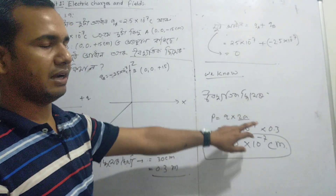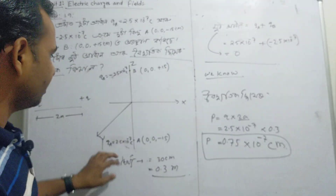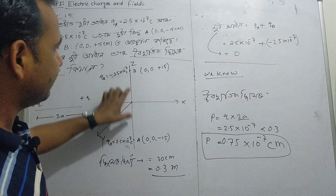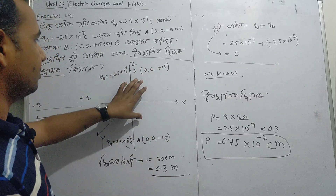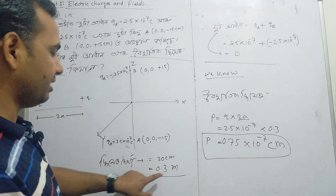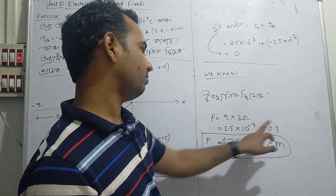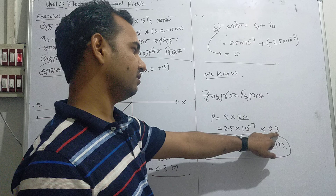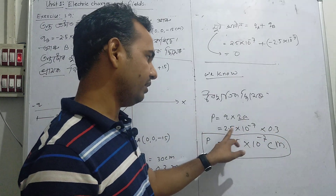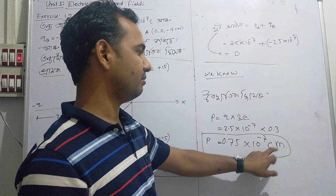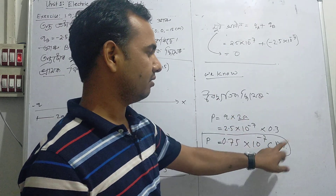Q1 is 2.5 into 10 to the power minus 7, and the distance is 15 plus 15, so total 0.3 meter. Multiplying: 2.5 times 0.3 — actually 25 into 3 equals 75. So P is 7.5 into 10 to the power minus 8 Coulomb meter, which equals 0.5 into 10 to the power minus 1.